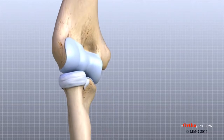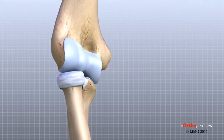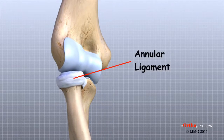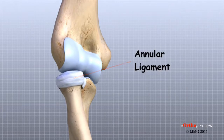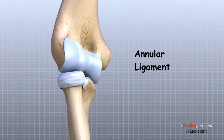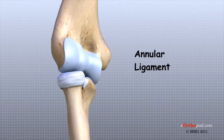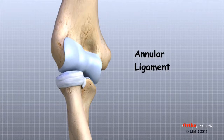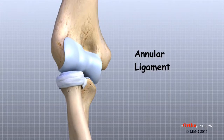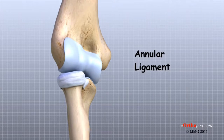Another important ligament for elbow function is the annular ligament. This ligament wraps around the radial head and holds it tight against the ulna. The word annular means ring-shaped, and the annular ligament forms a ring around the radial head as it holds it in place. This ligament can be torn when the entire elbow or just the radial head is dislocated.